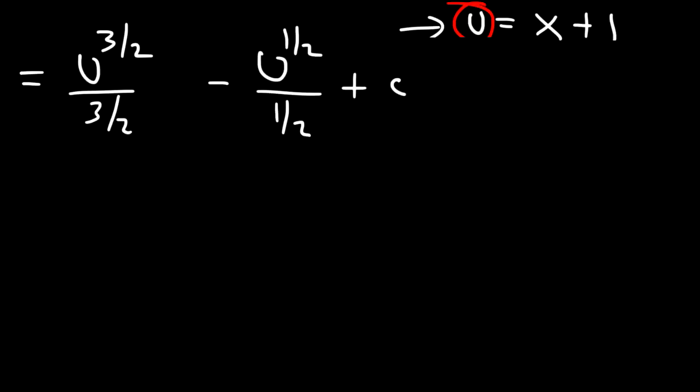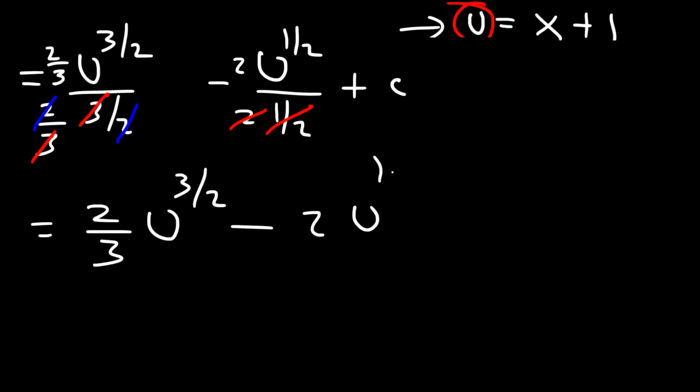Now at this point, we need to simplify what we have. So for this expression, I recommend multiplying the top and the bottom by 2 thirds. And for the other one, just by 2. 2 thirds times 3 over 2. The 3s will cancel, and the 2s will cancel. And so you're just going to have 2 thirds u to the 3 halves. For the second one, 2 times a half is 1. And so you're just going to have negative 2 times u to the 1 half plus c.